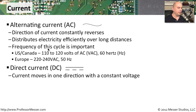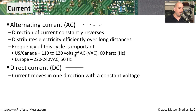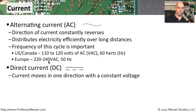The frequency of this cycle is important to understand. In the United States and Canada, connections coming out of the wall are somewhere between 110 to 120 volts of alternating current, running at 60 cycles per second — or 60 hertz. In other parts of the world, you may find 220 to 240 volts of alternating current coming out of the wall, running at a different frequency: 50 hertz.